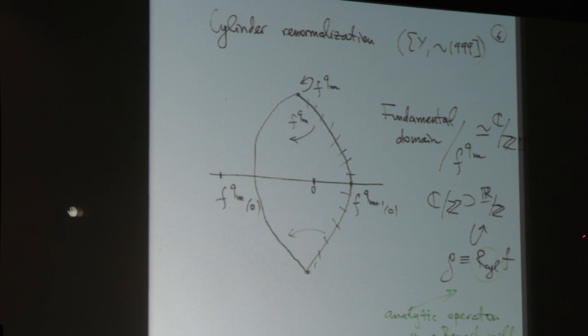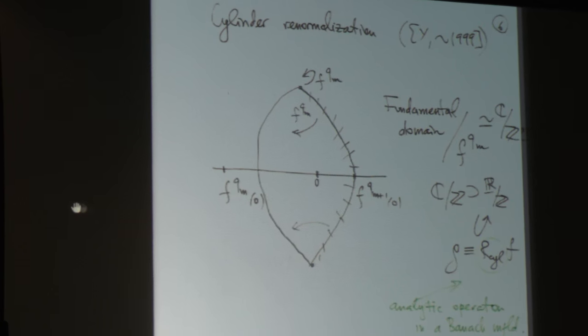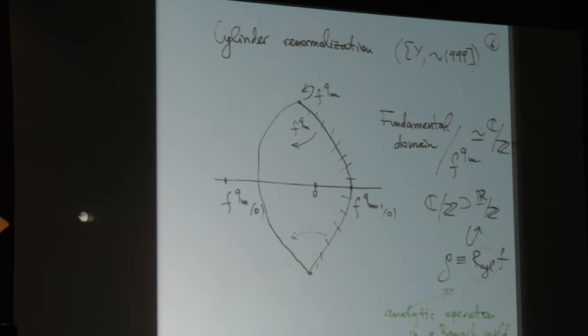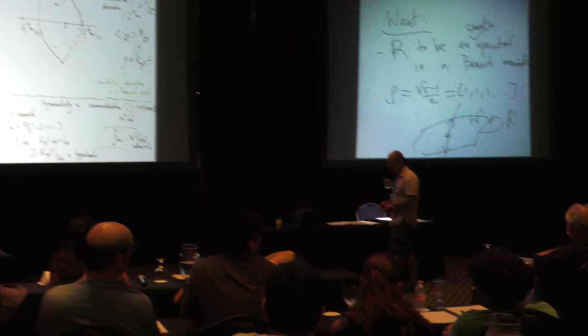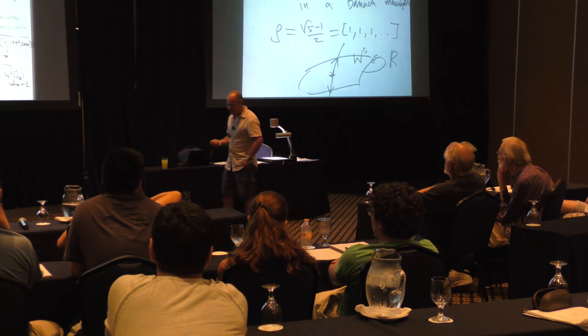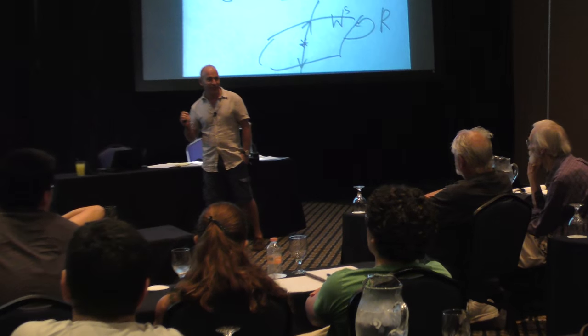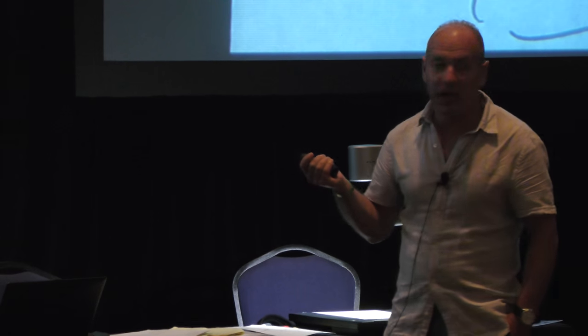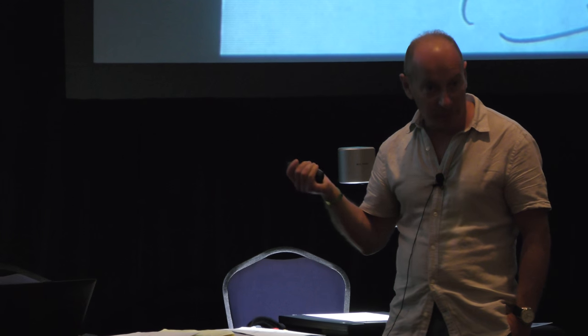A miracle happens: C mod Z as a Riemann surface does not have any non-affine conformal automorphisms — that's a version of Liouville's theorem. Therefore we recover the canonical affine structure that was lost before. I can uniformize this Riemann surface to get C mod Z, which contains R mod Z as the equator, and the first return map to the equator is an analytic map of an actual honest circle. This is cylinder renormalization — an analytic operator in a Banach manifold of analytic maps defined on a fixed annulus. That the normalization of phases doesn't seriously change things is a major piece of the theory, a consequence of complex a priori bounds.